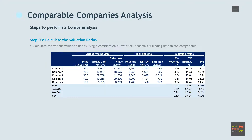Step 3: Calculate the valuation ratios. With a combination of historical financials and trading data in the comps table, it's time to start calculating the various ratios that will be used to value the company in question. The main ratios included in a comparable company analysis are EV to revenue, EV to EBITDA, price to earnings, and price to book. The ratios are basically calculated by dividing the respective market trading data with the financial data.